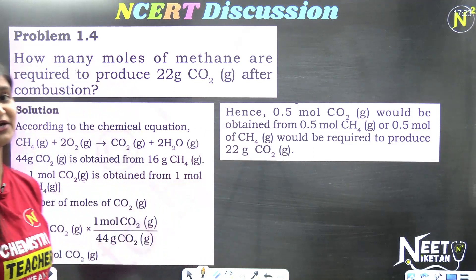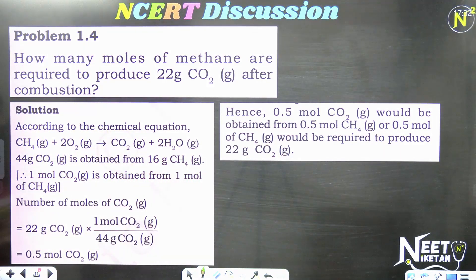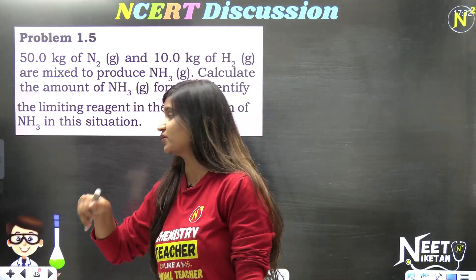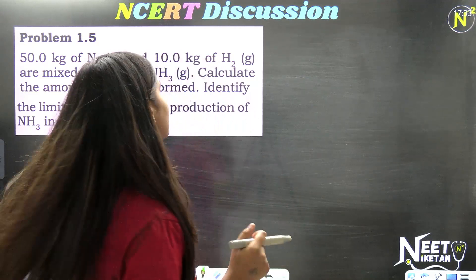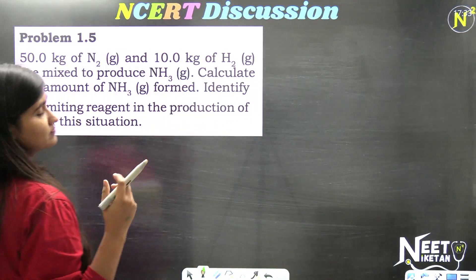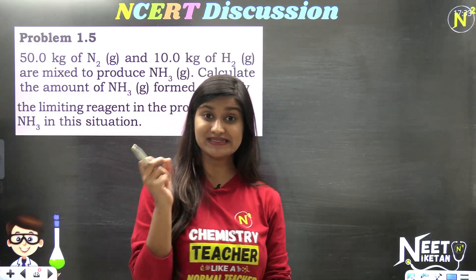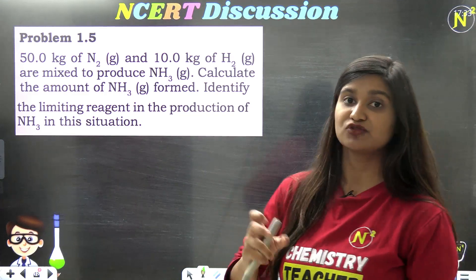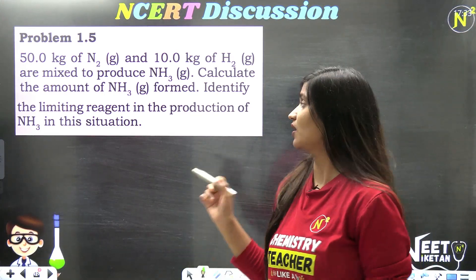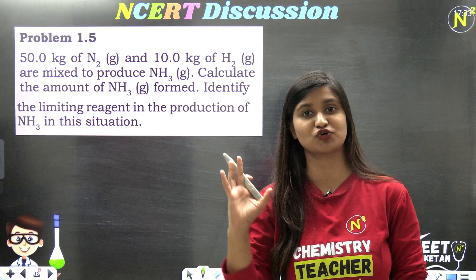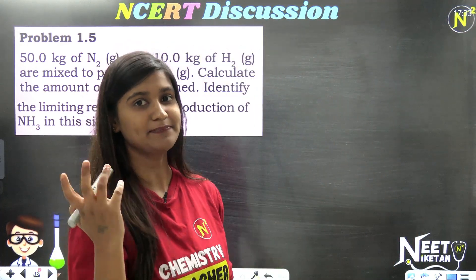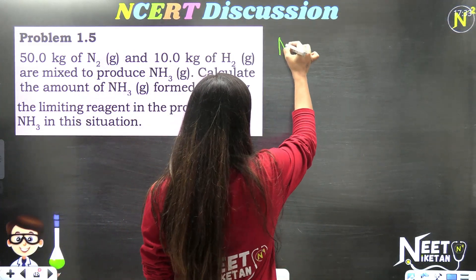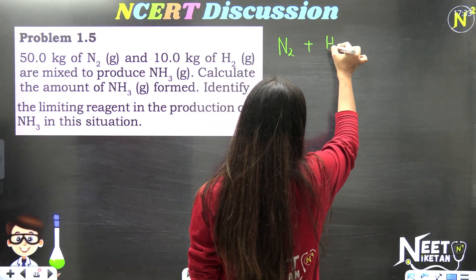Clear, no difficulty there. Let's look at the next question — problem 1.5. 50 kg of nitrogen gas and 10 kg of hydrogen gas are taken to produce ammonia. We need to find how much ammonia is produced and identify the limiting reagent.